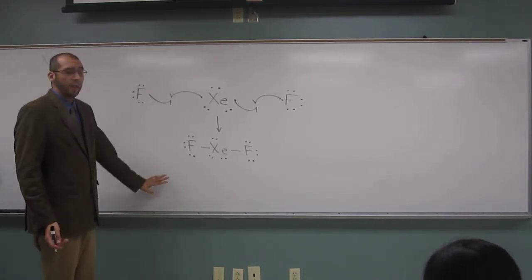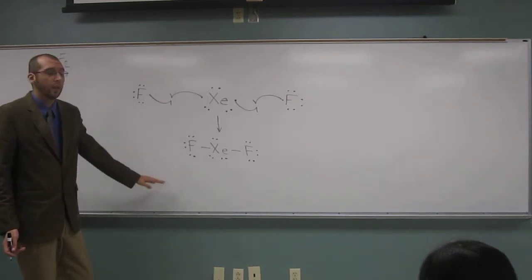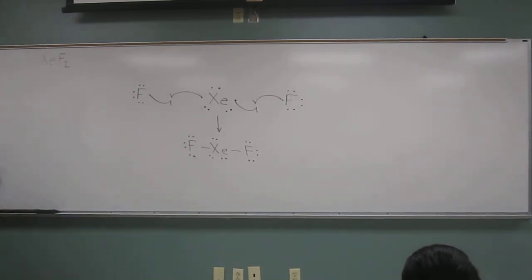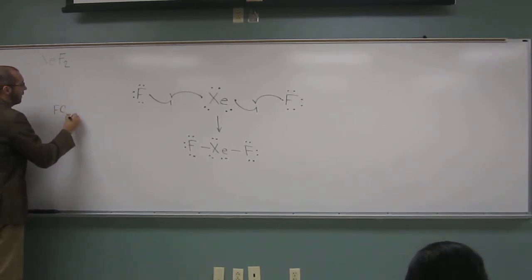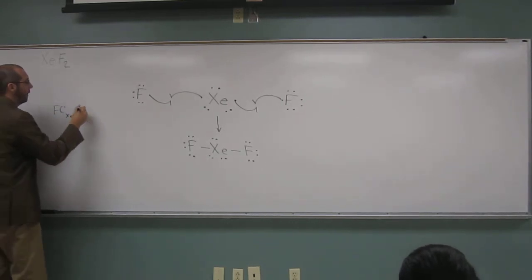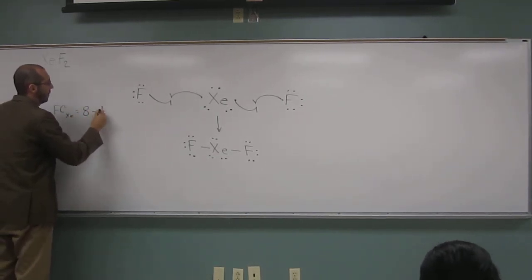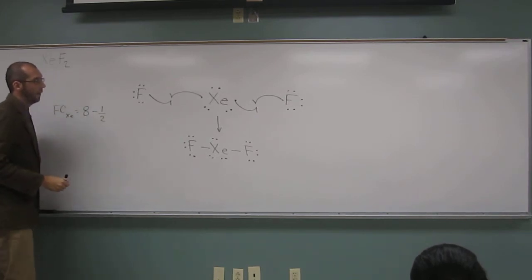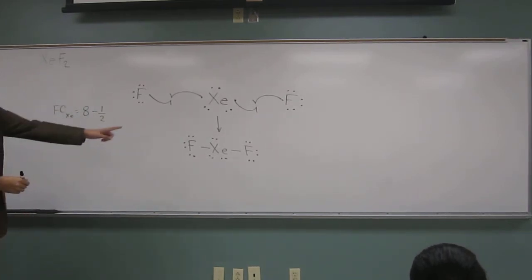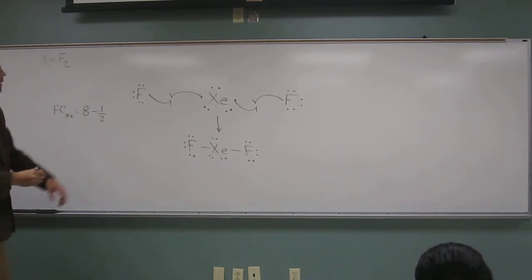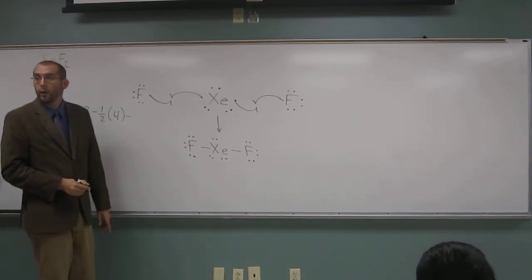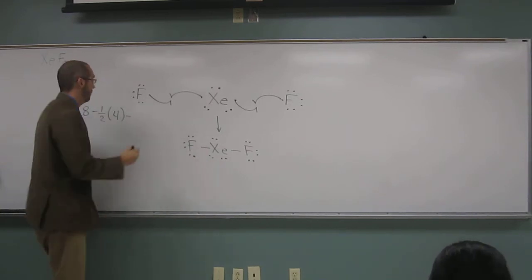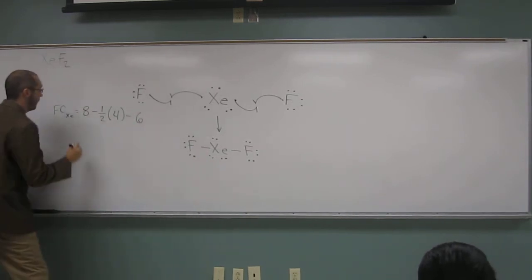If you wanted to confirm the formal charges of these things, we could do that. So the formal charge of xenon is going to be eight minus one half of the bonding electrons, so two, four, right, minus the non-bonding electrons: two, four, six, right?